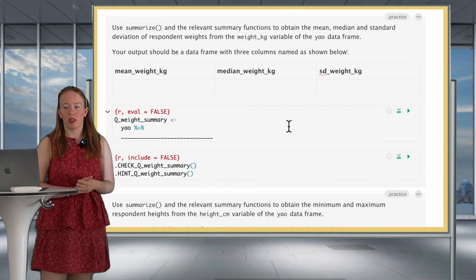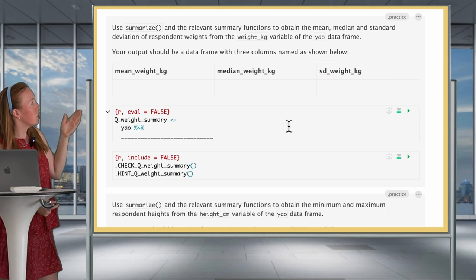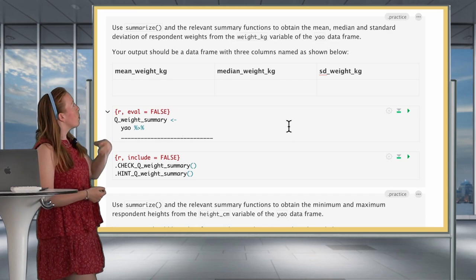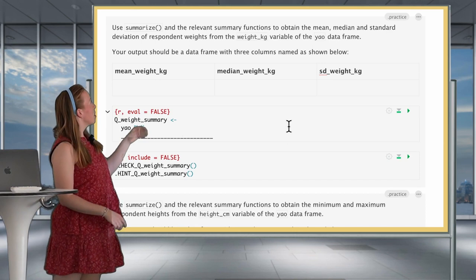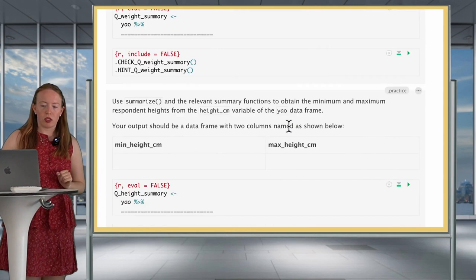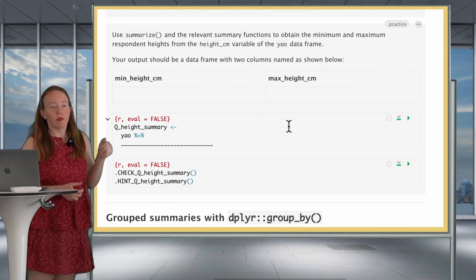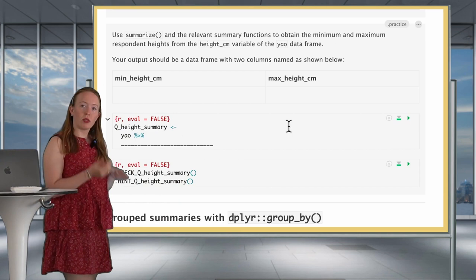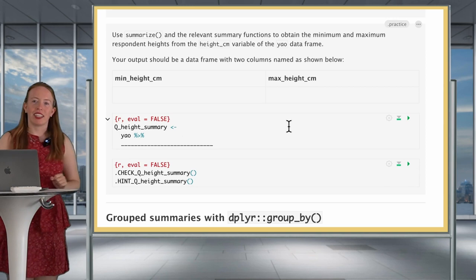First, it's time for your first practice question about summarize. Use summarize and the relevant summary functions to obtain the mean, the median, and the standard deviation of the weights of the respondents in the Yaounde data frame. Your output should have mean_weight_kilogram, median_weight_kilogram, and SD_weight_kilogram. Then try the second practice question: use summarize to obtain the minimum and maximum of the respondents' heights — basically the tallest and shortest person.